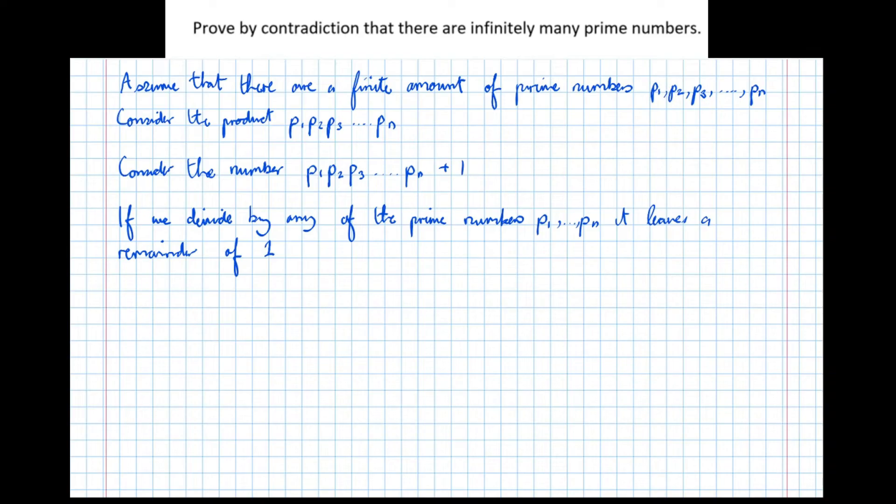So none of these primes can be a factor of this number. Therefore, none of these primes, P1, all the way to Pn, can be a factor.